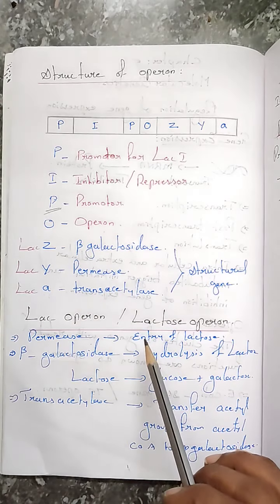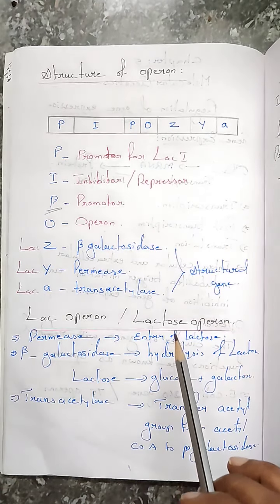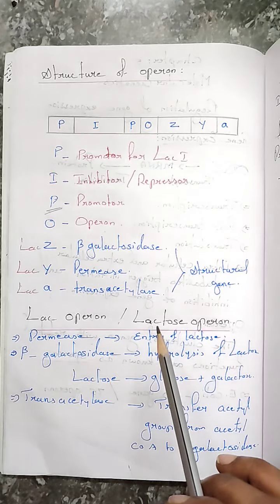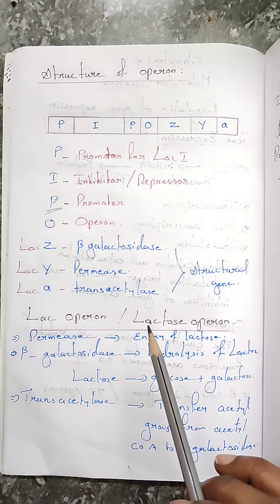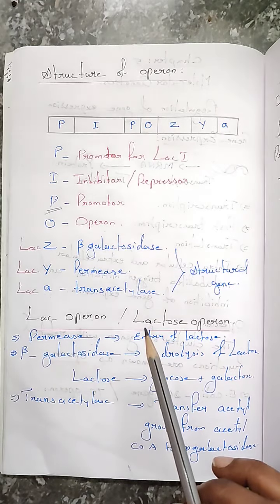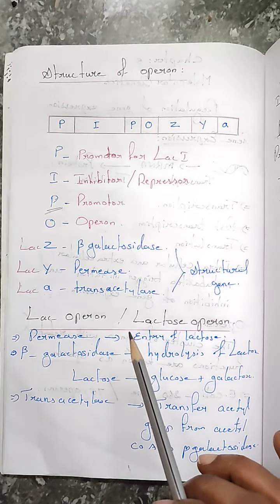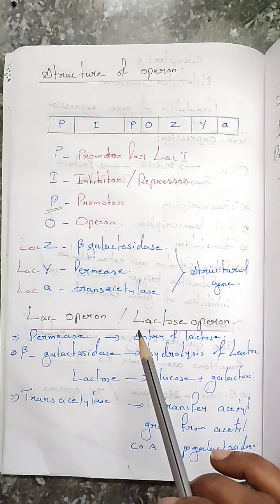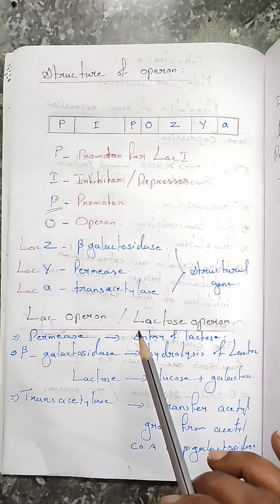What is the role of this lac operon? When E. coli or bacteria consumes lactose — lactose is one of the sugars and it is actually the food of this bacteria — the lactose must be metabolized inside the body of the bacteria. Because lactose is a disaccharide, the bacteria cannot consume it directly as lactose.